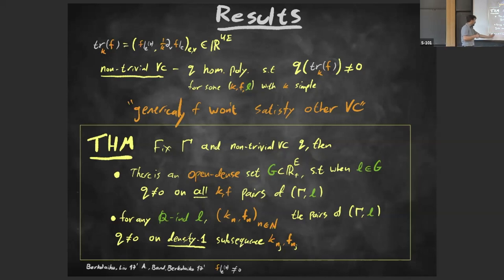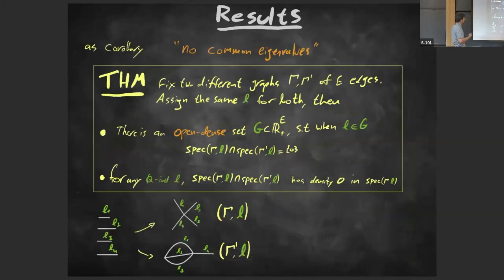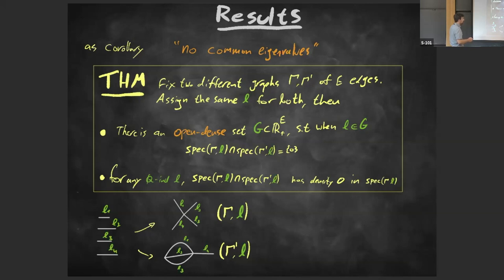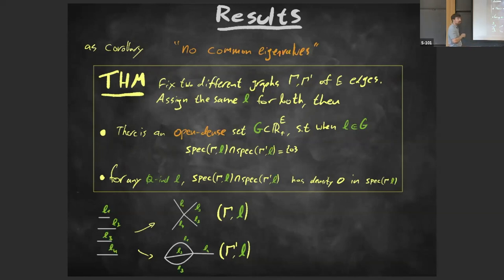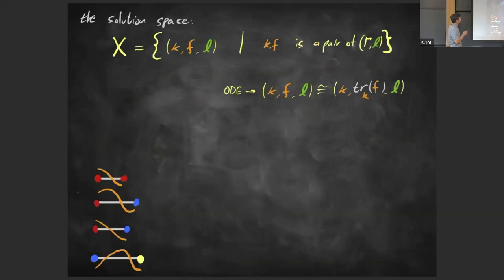Again, for rationally independent l's, Q doesn't vanish for a density-one subsequence. This generalizes a simpler result of Band, Koloirou, and Liu showing that function values at vertices don't vanish generically. One consequence: if you start with the same set of intervals and glue them in two different ways, for an open dense set of metrics the spectra are disjoint (or share only the trivial eigenvalue), and for rationally independent l the common spectrum has density zero.